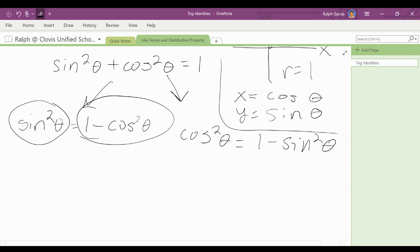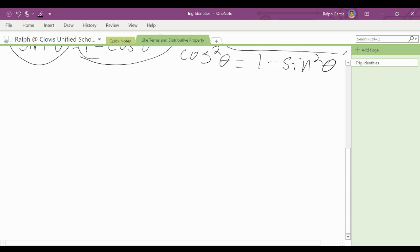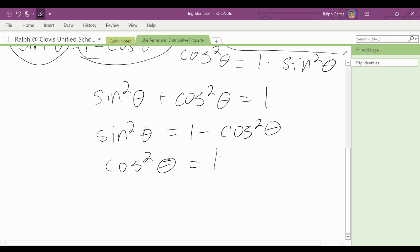So just kind of rewriting, so in your notes somewhere have this, and you want to have this as we do our equations today. So we have, just kind of rewriting them: sine squared plus cosine squared equals one, we also have sine squared equals one minus cosine squared, and cosine squared theta equals one minus sine squared theta.